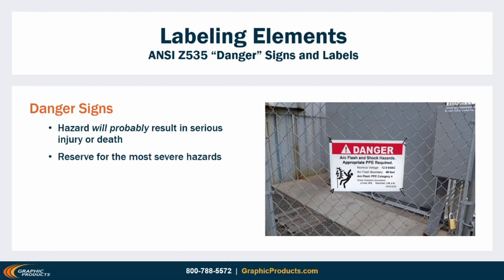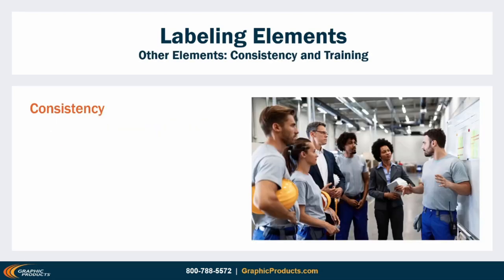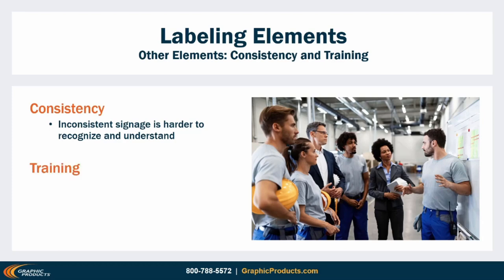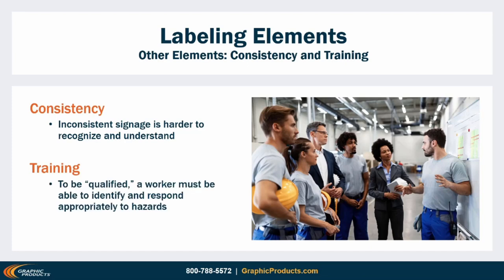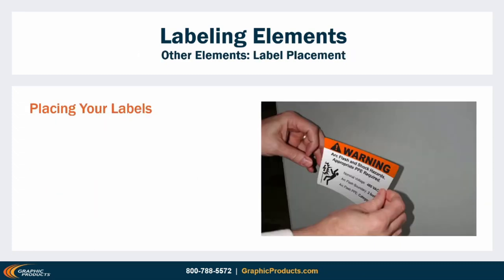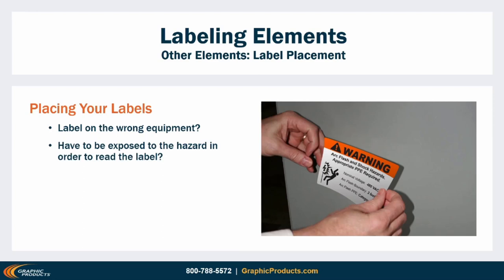Whatever you decide, keep it consistent across your workplace. If your labeling scheme isn't consistent across your facility, it will be harder for workers to recognize and understand your labels. Workers need to be trained on what to expect — to be qualified for electrical work under NFPA 70E, a person needs to be able to identify and respond appropriately to the hazards they'll be exposed to. Once your labels have been created and printed, pay attention to the way you post them. The right label on the wrong equipment can be worse than no label at all — the whole point of the label is safety.